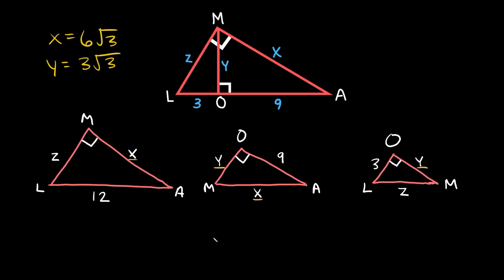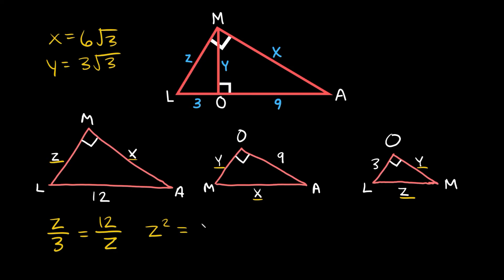Lastly, let's solve for Z. The two triangles that have a Z are the big one and the small one. Z is the short leg of the big triangle, and the short leg of the small triangle is 3. The hypotenuse of the small triangle is Z, and the hypotenuse of the big triangle is 12. So our proportion is Z over 3 equals 12 over Z. Cross-multiplying gives Z squared equals 3 times 12, which is 36. Taking the square root, Z equals 6.